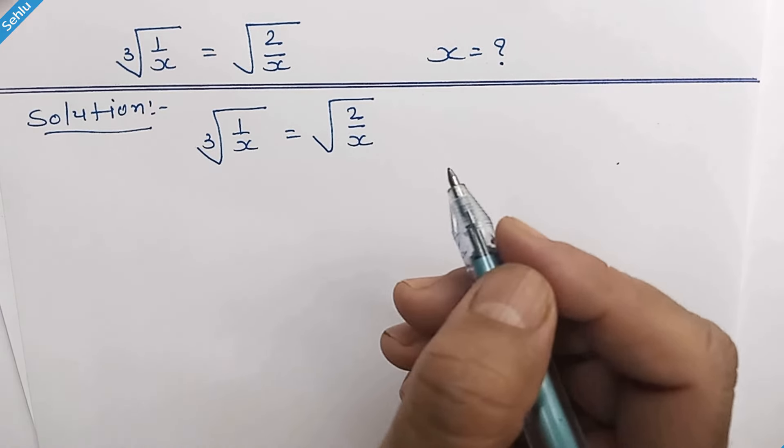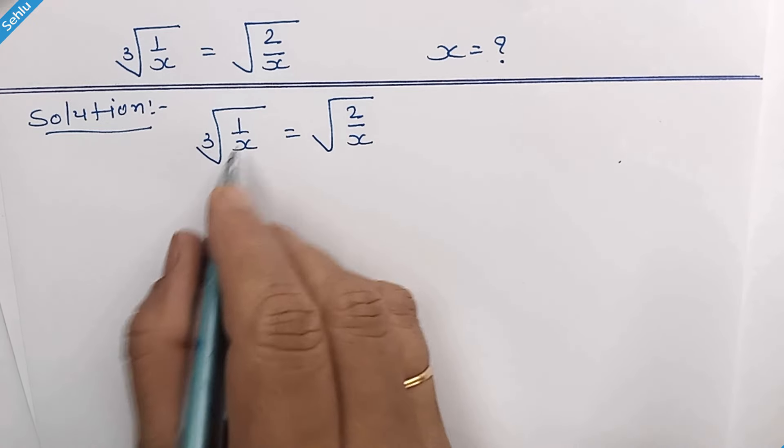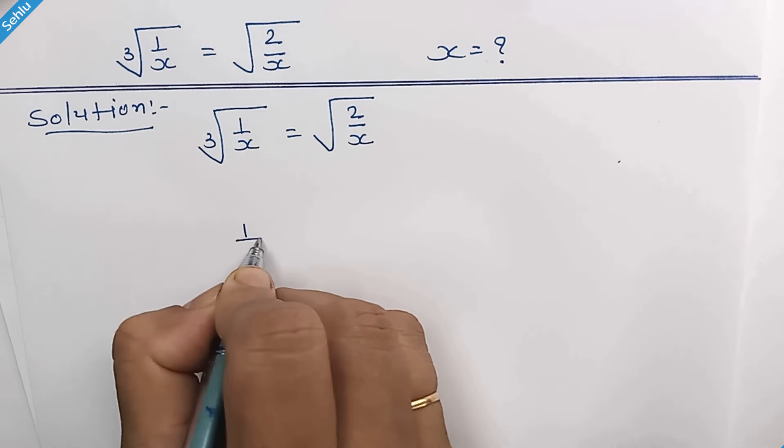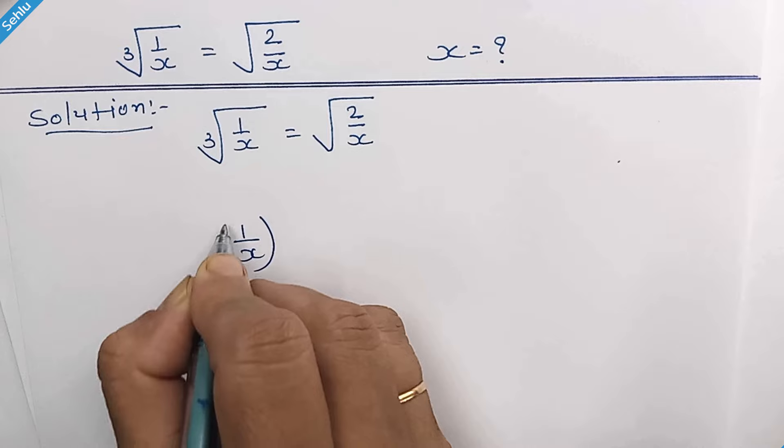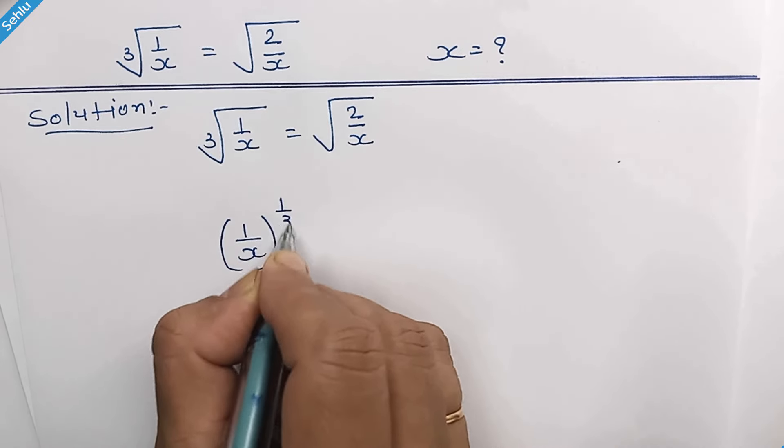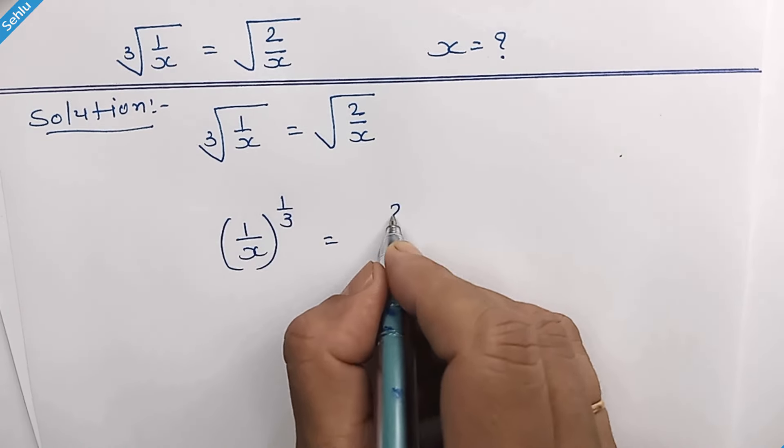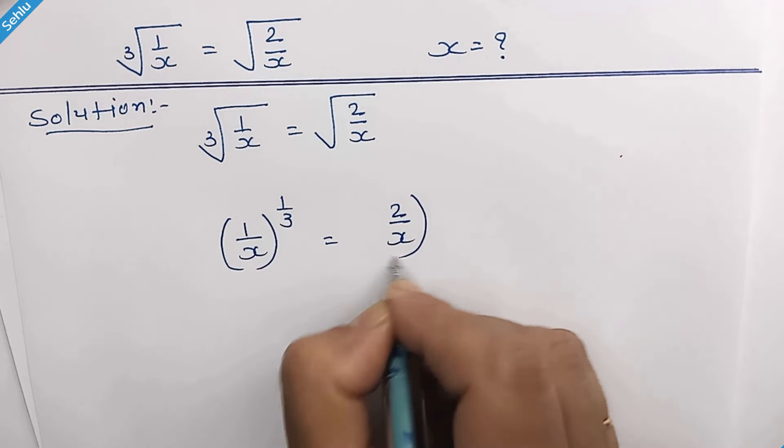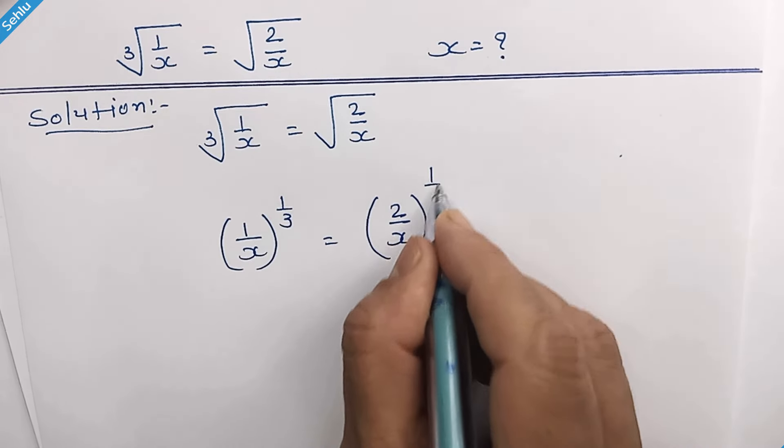What we can do here? Let's see. This can be written as 1 over x whole to the power 1 over 3 and this can be written as 2 over x whole to the power 1 over 2.